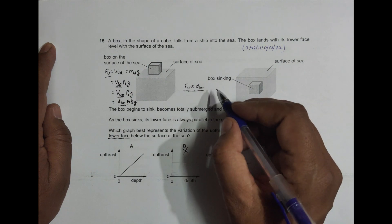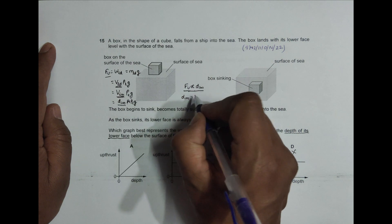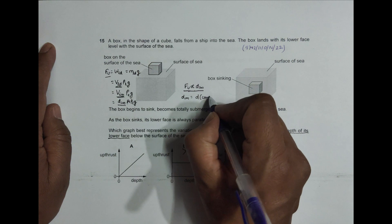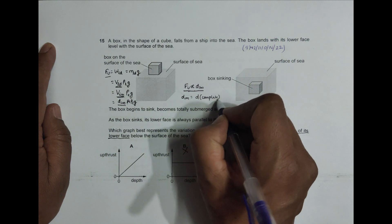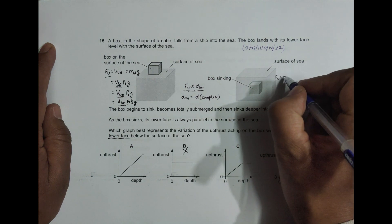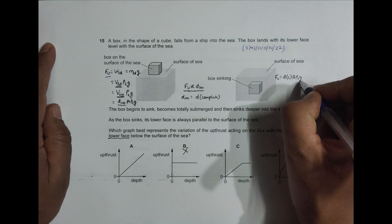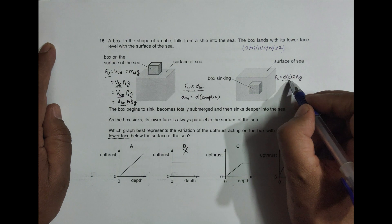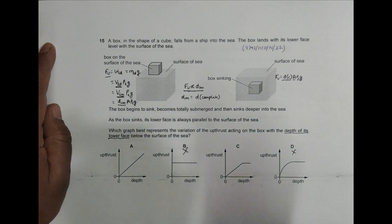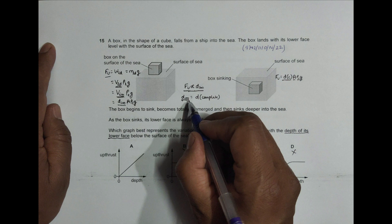After full immersion, the depth of the immersed portion equals the complete depth — the whole thickness of the body. So the force of upthrust equals complete depth into A into ρL into G. After full immersion, this is constant, and the depth of immersion is at its maximum.